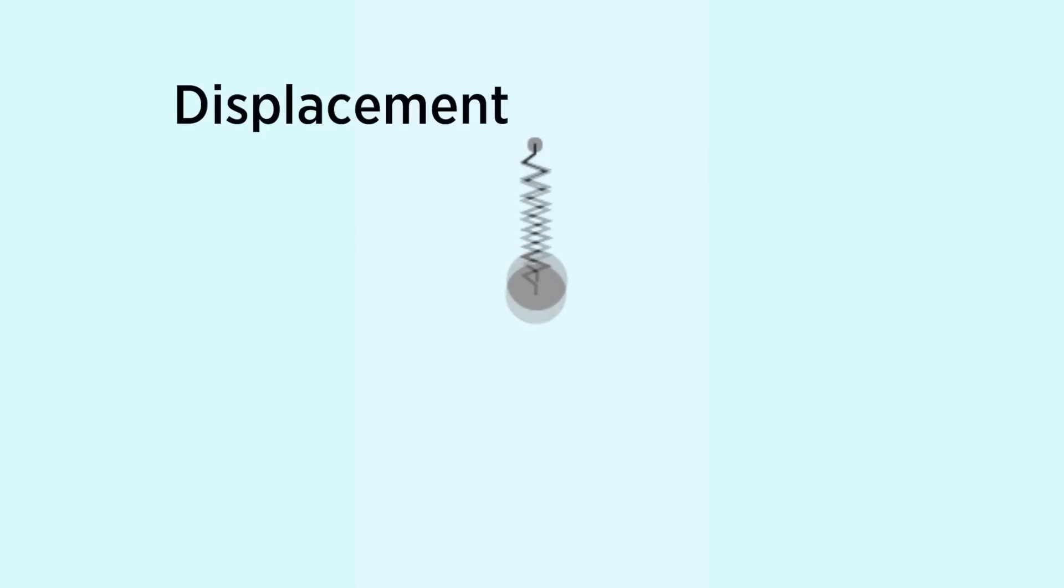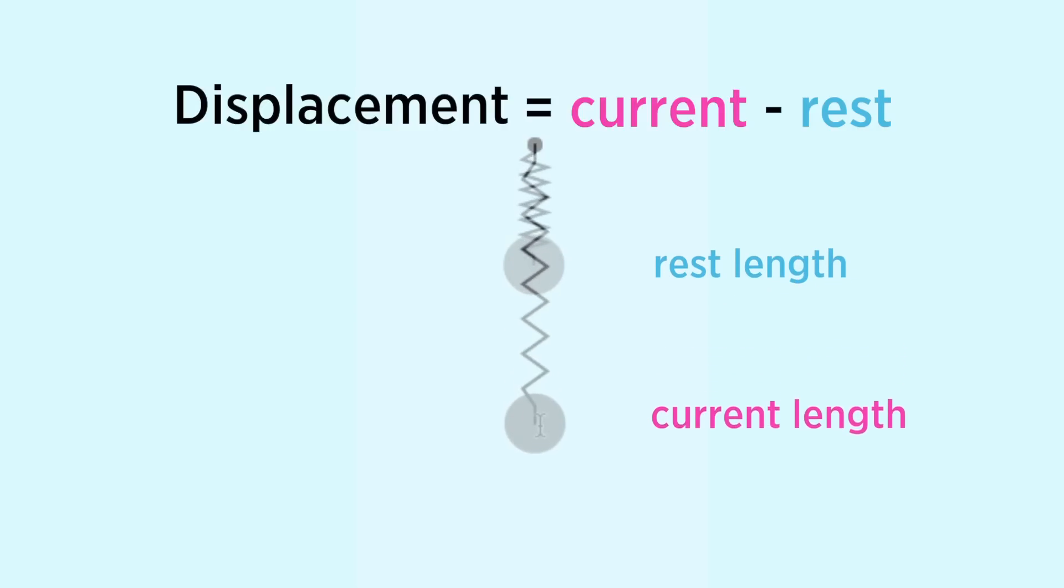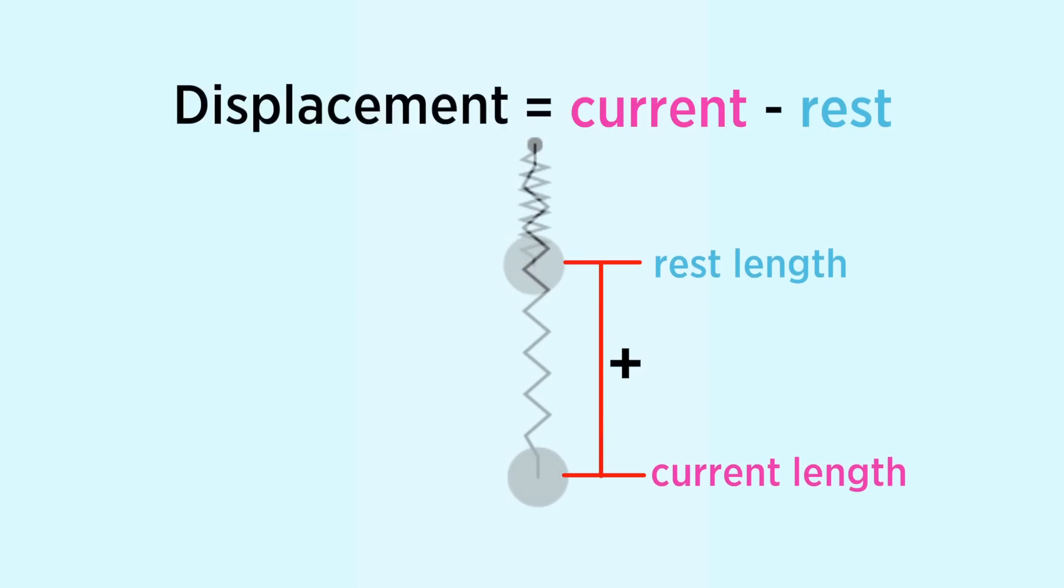Displacement is defined as the current length minus the rest length of the spring. When we stretch a spring, the displacement is positive and the resulting spring force is negative. This is known as the pull force.